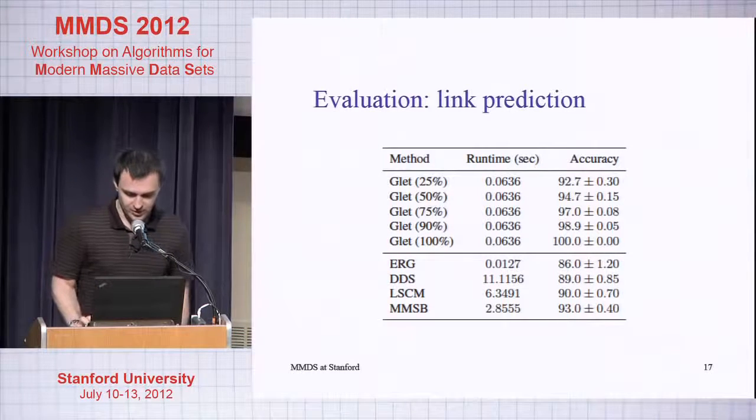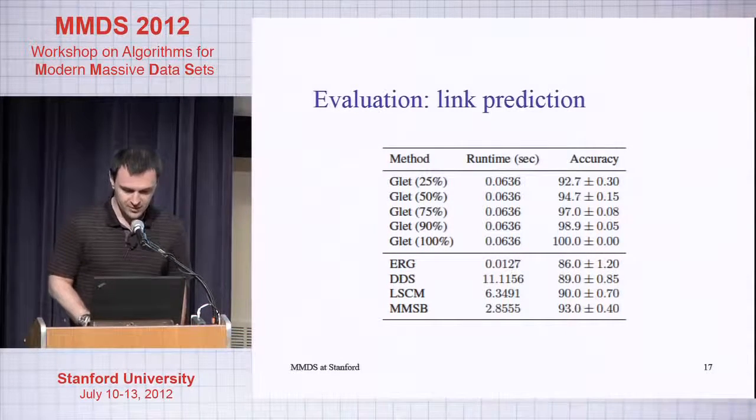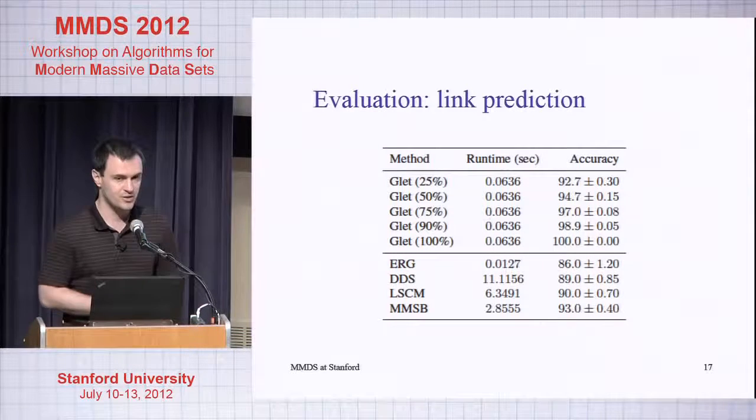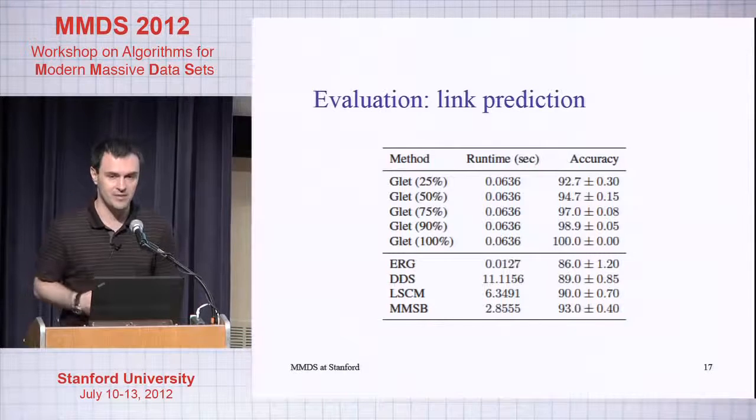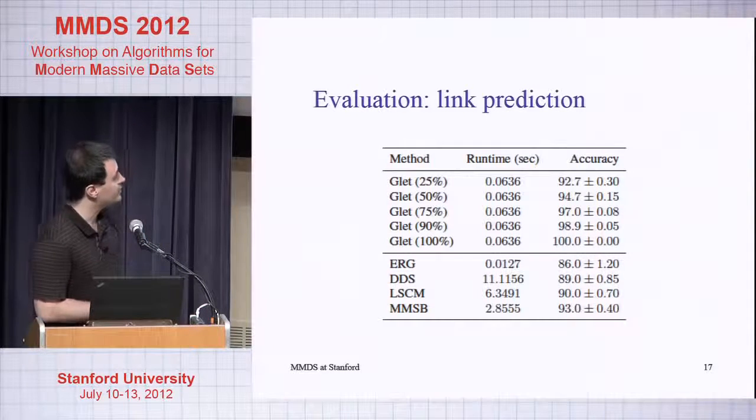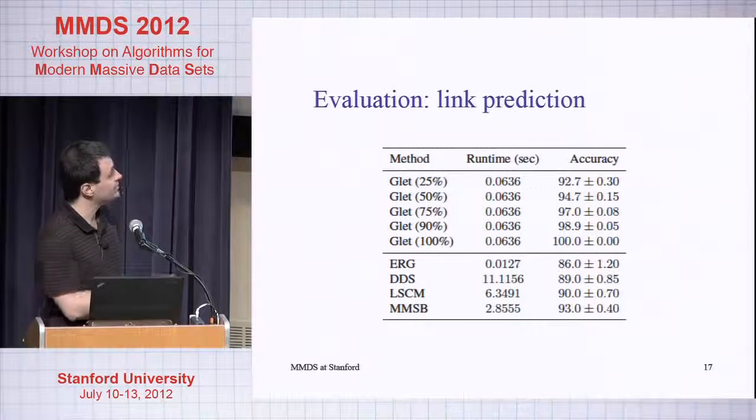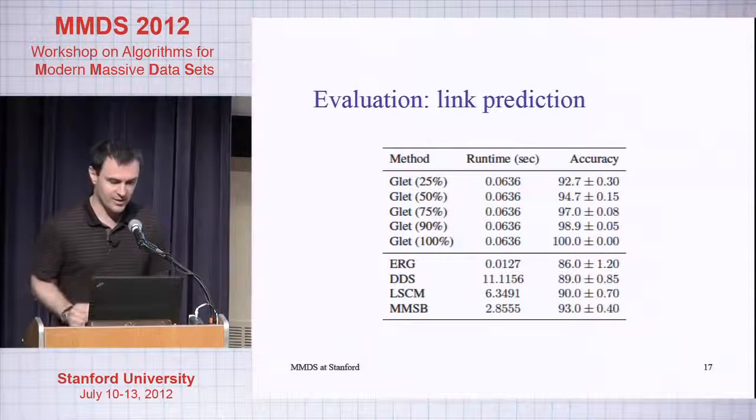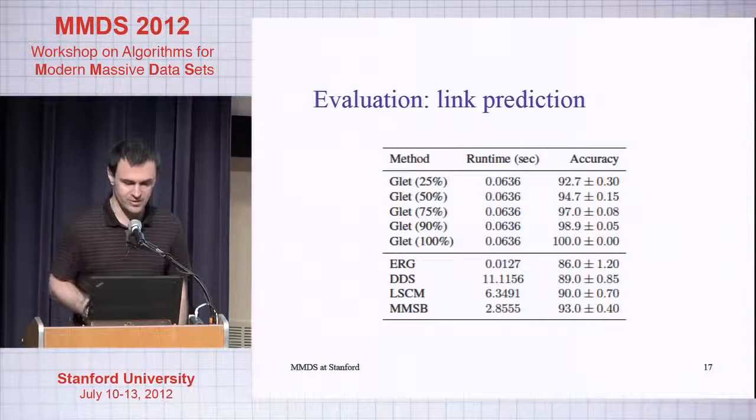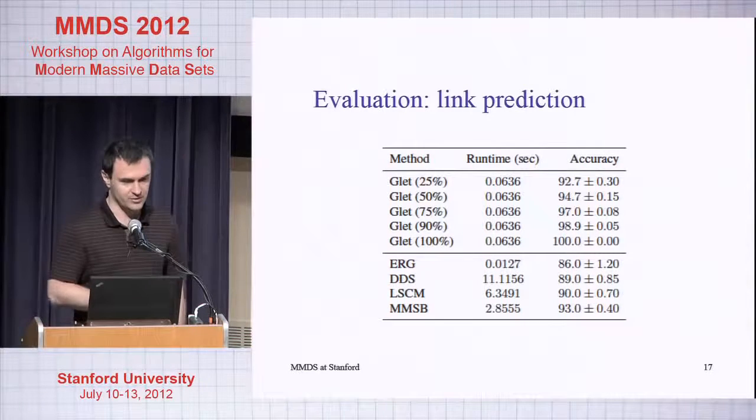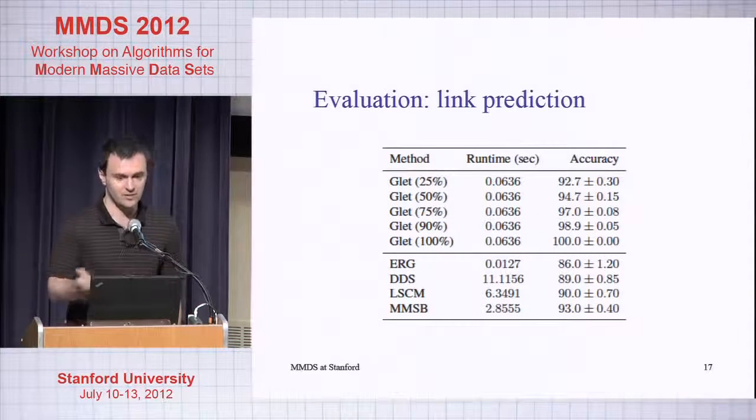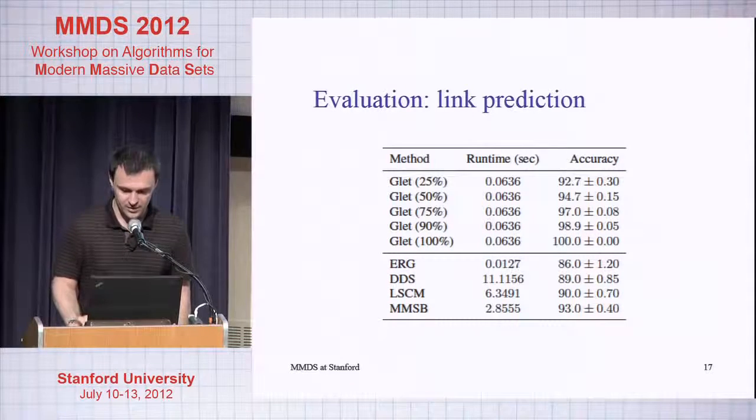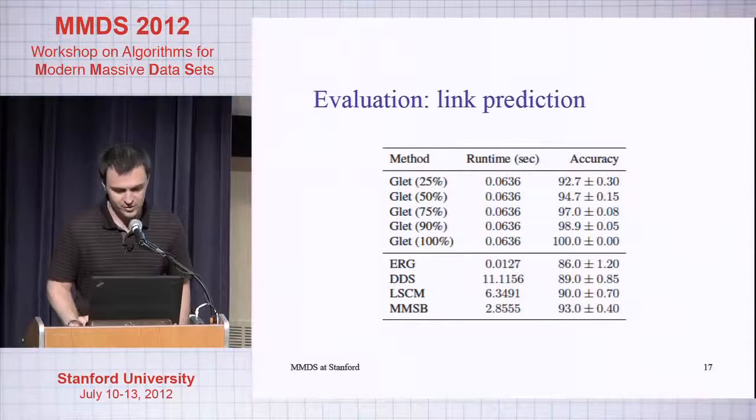That's what this table is about. The method here, Graphlet, where there's a percentage in parentheses, tells you how many basis I'm actually using for this particular example. This is a Graphlet decomposition with 25% of the estimated optimal number of bases. The run time is obviously constant because you first fit the method and then you just throw away some bases, and you can see that the accuracy is pretty good.